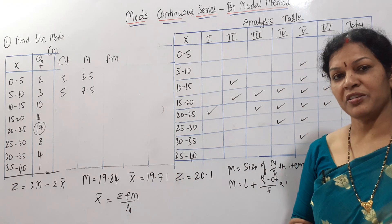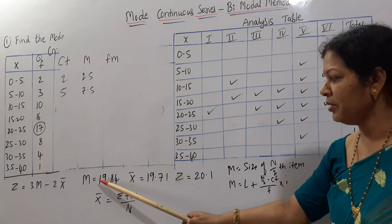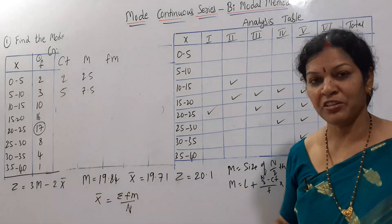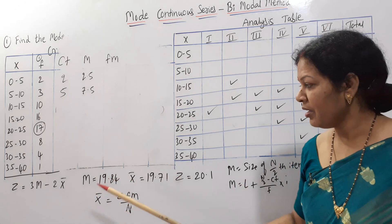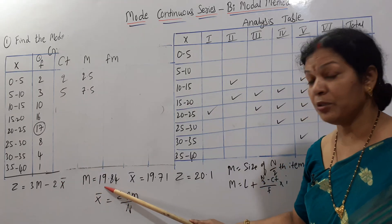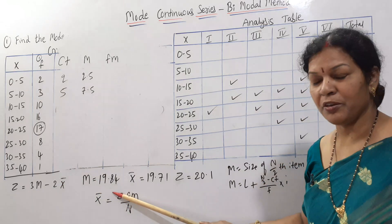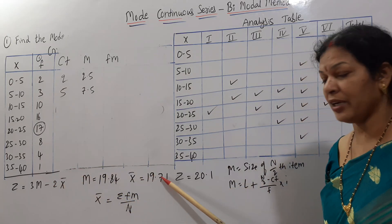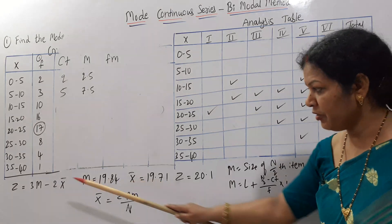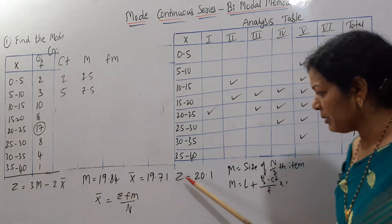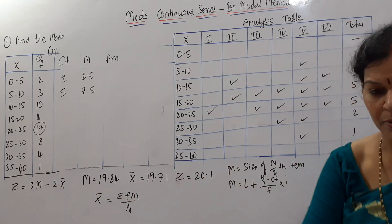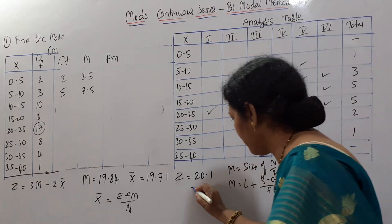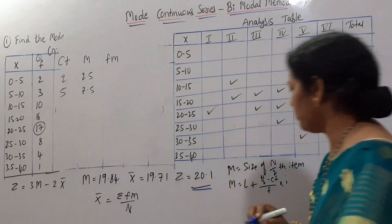X̄ = 19.71. Now applying the bimodal formula: Mode = 3 × median − 2 × mean = 3 × 19.84 − 2 × 19.71 = 20.1.